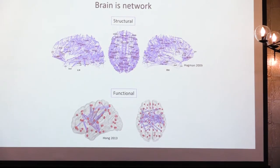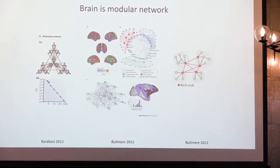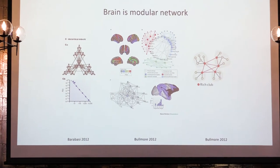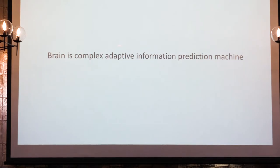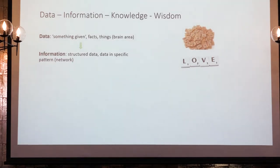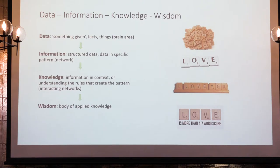Brains are networks, both structural and functional. These networks are hierarchical and integrated by the rich club. From a practical point of view, the brain can be seen as a complex adaptive information machine that constantly predicts. The brain uses data — which is like blocks of information — and information itself is when you put these blocks into a certain specific pattern: it's structured data. Knowledge is more how you put that information into a certain context, and wisdom is how you apply that.